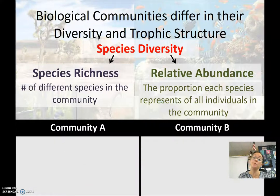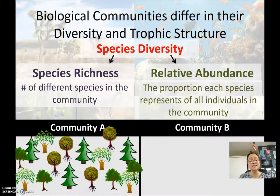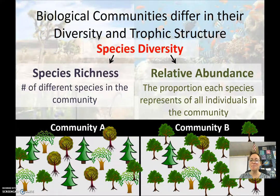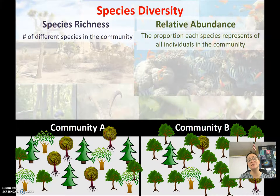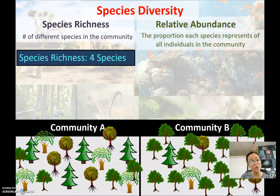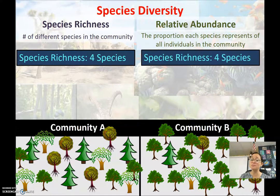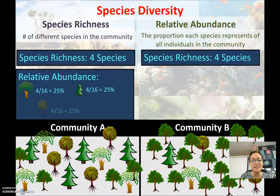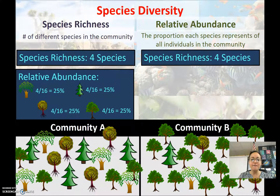Species richness is simply the number of different species in a community. Relative abundance is the proportion of each species and how it represents all individuals. Looking at community A and community B: both have the same four species. But in community A, each plant species is evenly distributed — roughly 25% of the forest is each type of tree.